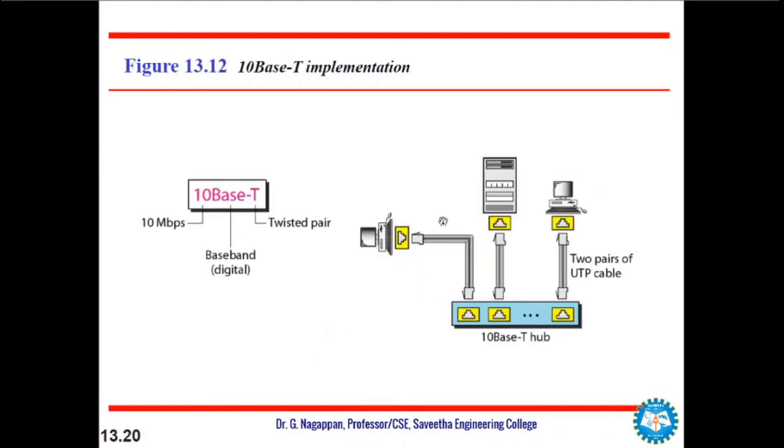Next is twisted pair Ethernet, the 10BaseT implementation, which uses physically star topology. The stations are connected to the hub via two pairs of twisted cables. The pairs of twisted pair cables create two paths: one for sending and the other for receiving between the stations and the hub. Any collision here happens in the hub. Compared to 10Base5 and 10Base2, we can see that the hub actually replaces the coaxial cable as far as collision is concerned. The maximum length of the twisted pair cable here is defined as 100 meters to minimize the effect of attenuation.